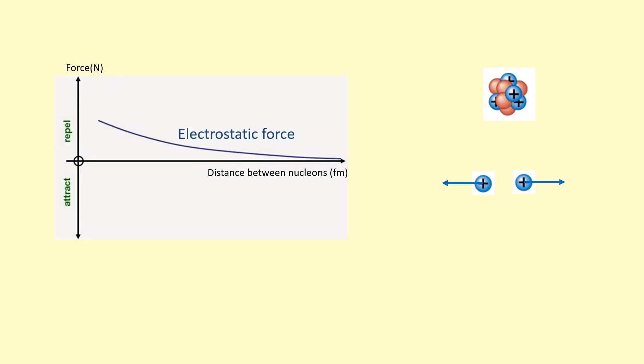Inside the nucleus of an atom, we've got protons and neutrons. Now the protons are positive, so they're going to repel each other, and that's what we call the electrostatic force. It's quite repulsive and is pushing the nucleus apart.